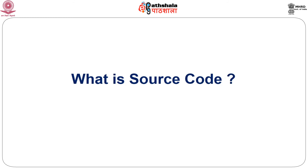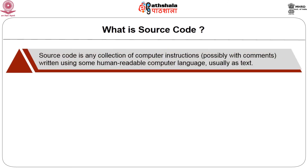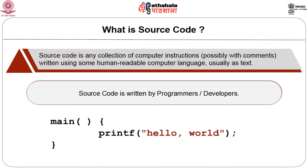Let us begin with the definition of source code. Programmers or developers write programs that are executed on computers. The code that is written is known as source code. The source code is either compiled or interpreted, depending on the programming language.